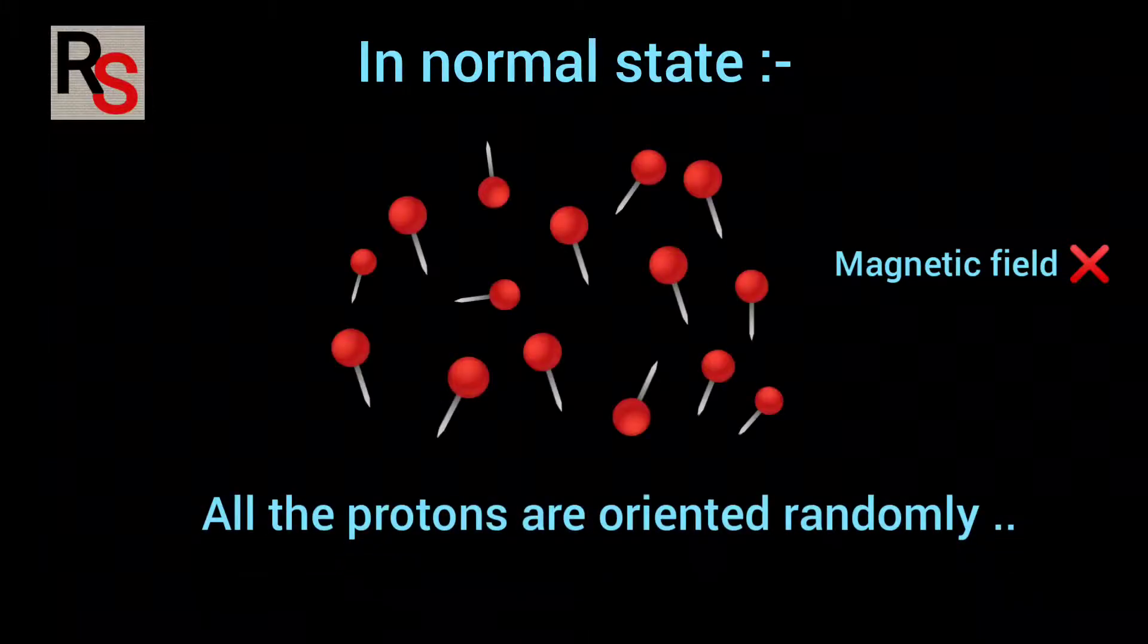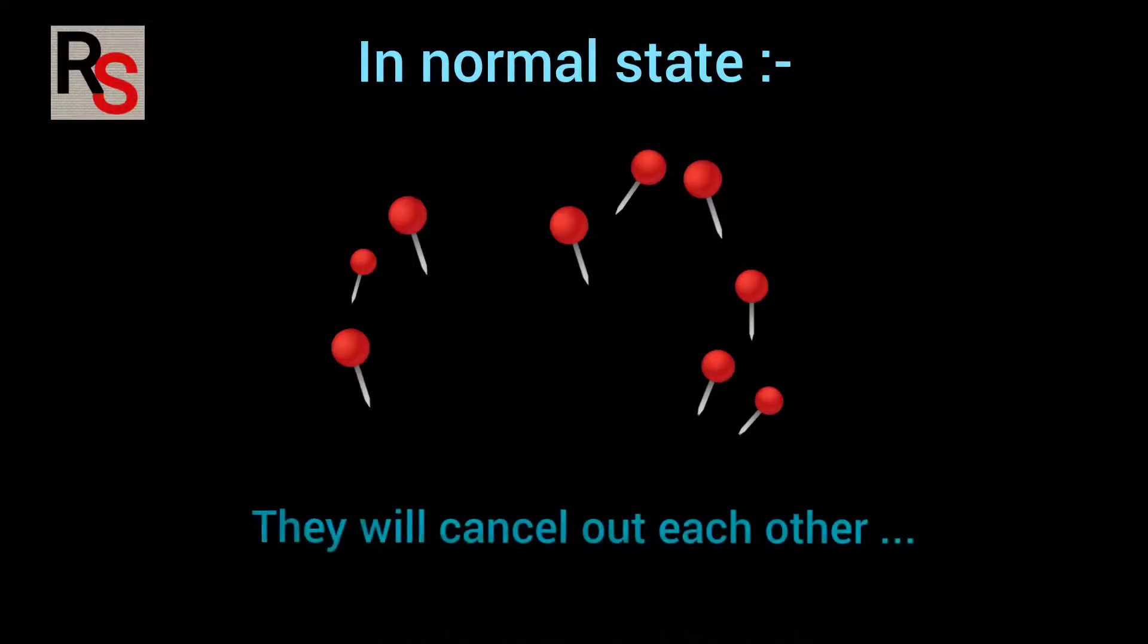In a normal state, not under the influence of any external magnetic field, all the protons are oriented randomly. So they will cancel out each other and there is no overall magnetic field.